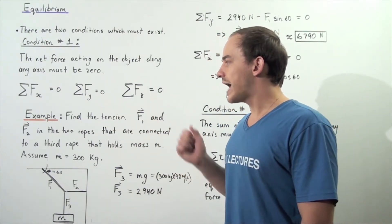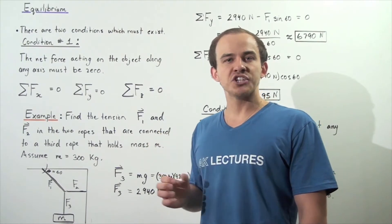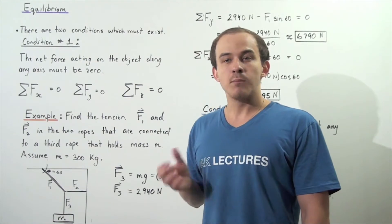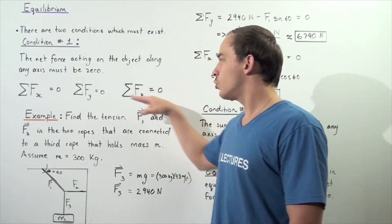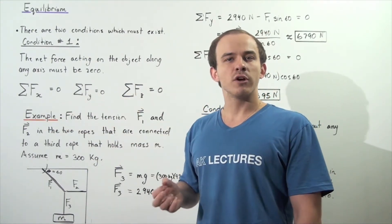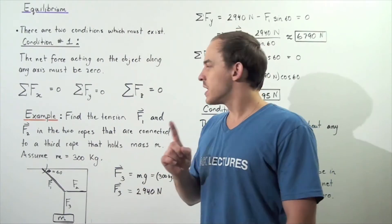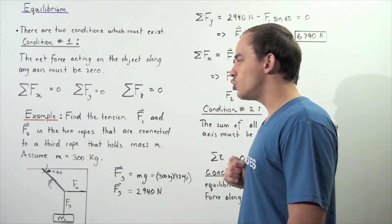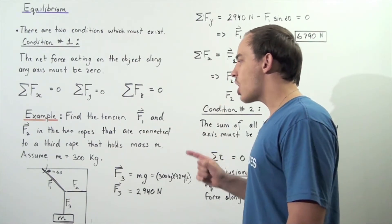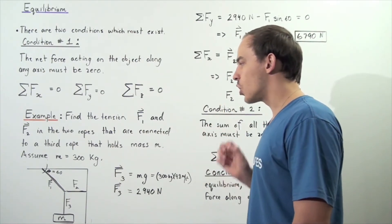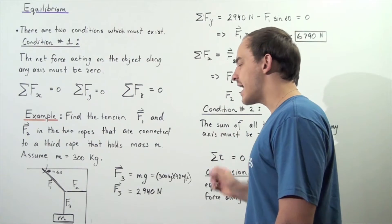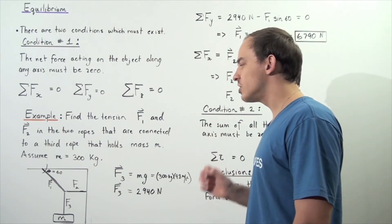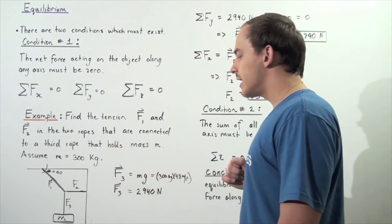So let's look at one example in which our object will be in static equilibrium. And our job will be to use the following equations to solve for the force in the rope. Find the tension F1 and F2 in two ropes that are connected to a third rope that holds mass M. Assume the mass M is 300 kilograms.